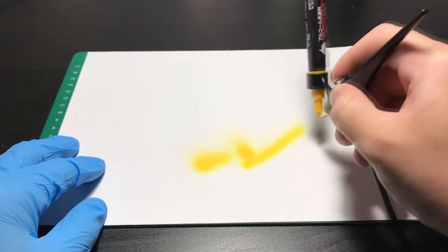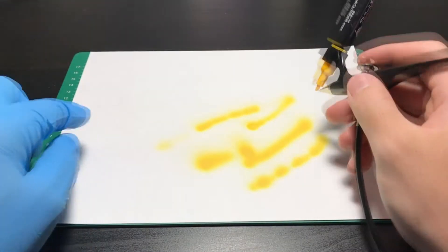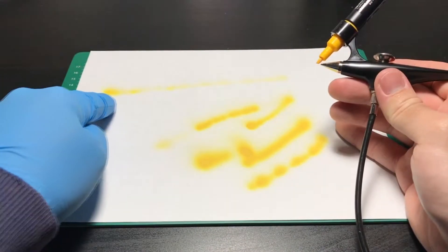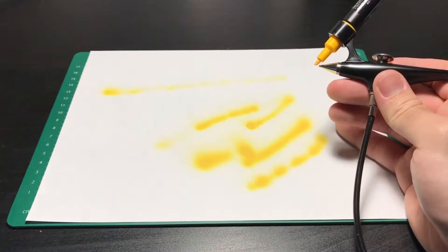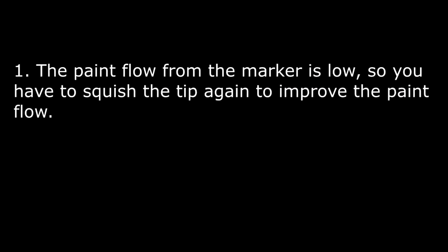However, with Gundam Marker Airbrush System, there is one thing you have to keep in mind. First, look at this. Although I press the trigger, as you can see, the paint did not come out consistently. There's two reasons to this that I know of where, one, the paint flow from the marker is low, so you have to squish the tip again to improve the paint flow.